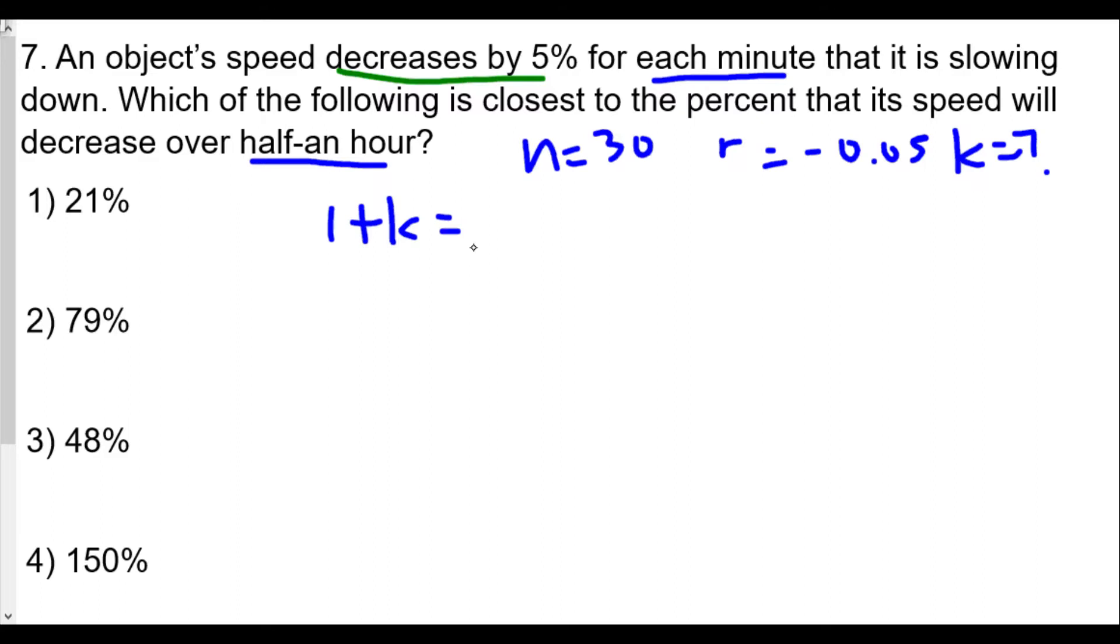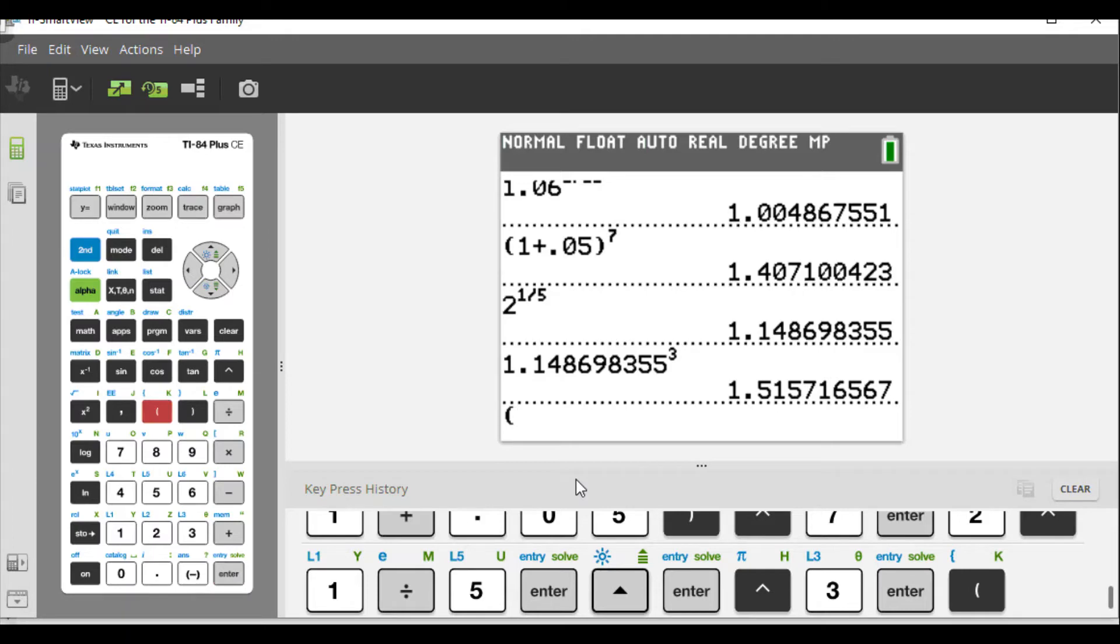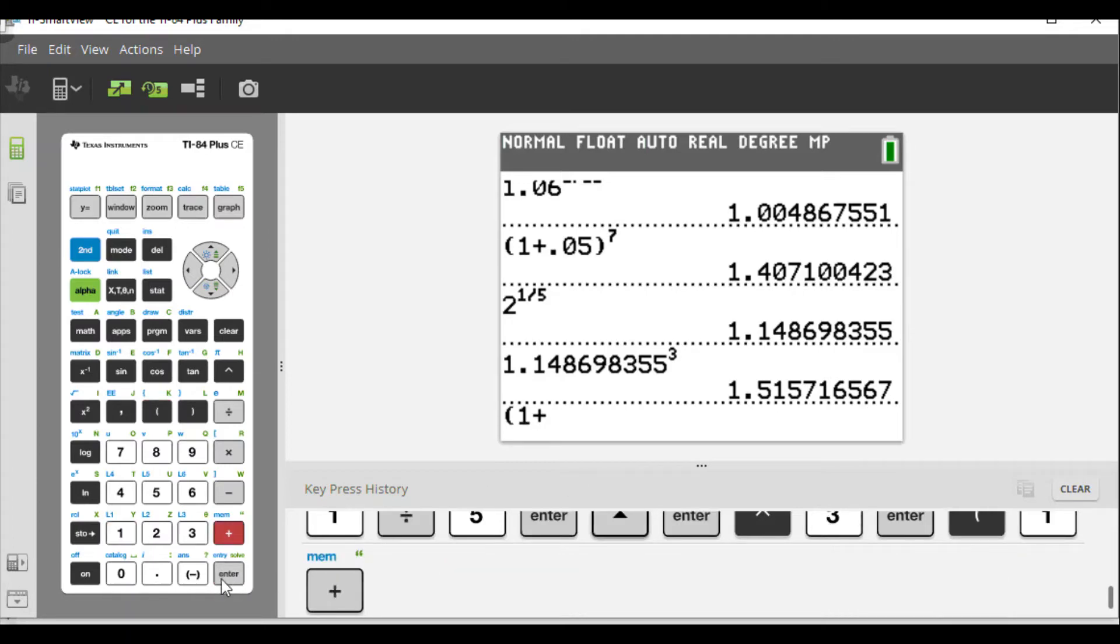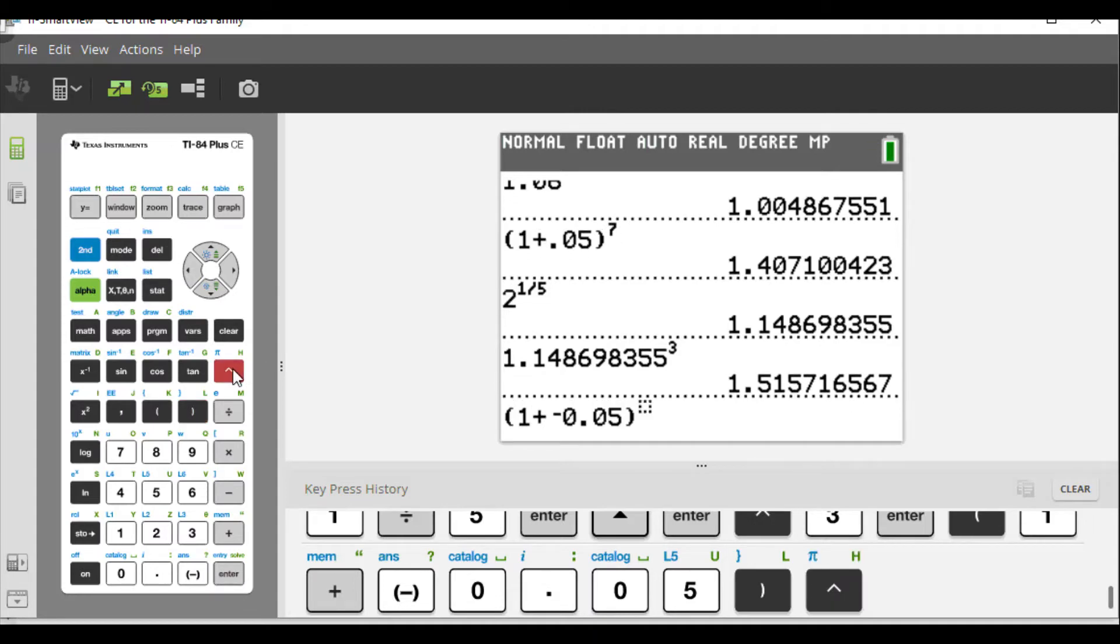So here we have, in parentheses, 1 plus negative 0.05, raised to the 30th power. We're going to use a graphing calculator: 1 plus negative 0.05 raised to the power of 30, because it's 30 minutes if we decrease by 5 percent every minute.